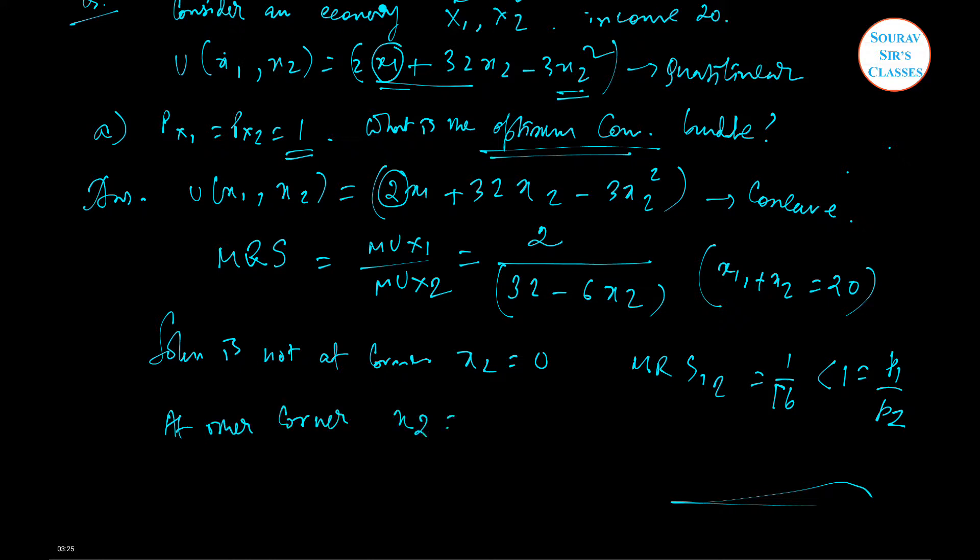At the other corner, solution is x2 equal to 20. At this point, marginal utility of x2, which is 32 minus 6x2, if you just put it, this will be less than 0 at this consumption level.